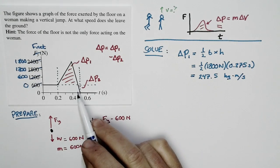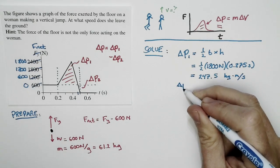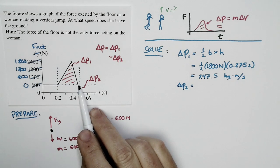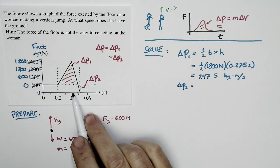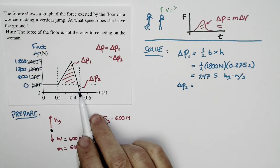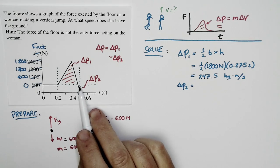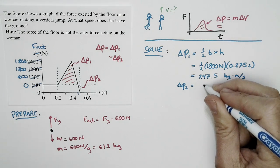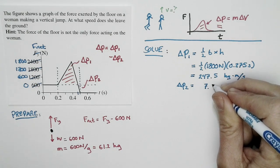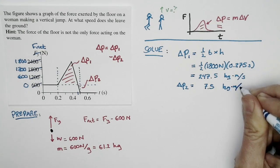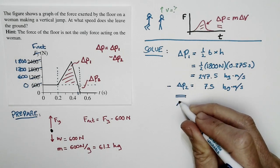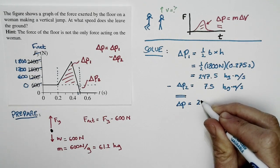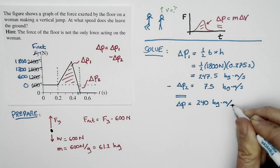Now I subtract delta P2. This segment spans just 0.025 seconds — a quarter of one-tenth of a second. The height of this triangle is 600 Newtons, so the area is 7.5 kilogram meters per second. Taking delta P1 minus delta P2 gives a total change in momentum of 240 kilogram meters per second.